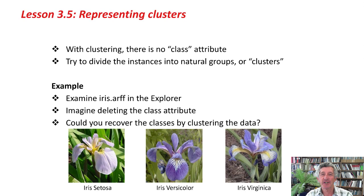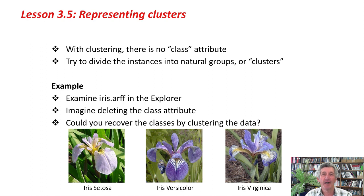With clustering, there's no class attribute. We're just trying to divide the instances into natural groups, or clusters. For instance, imagine the iris dataset that we looked at in the last course, and just imagine deleting the class attribute. There are three kinds of irises — iris setosa, iris versicolor, and iris virginica — with 50 of each in the dataset. The dataset gives petal lengths and petal widths and so on. Could you recover the three classes by clustering the data? You'll be trying that in the activity after this lesson.